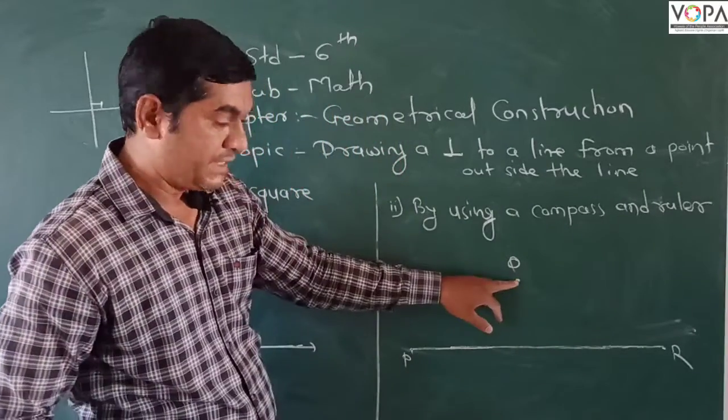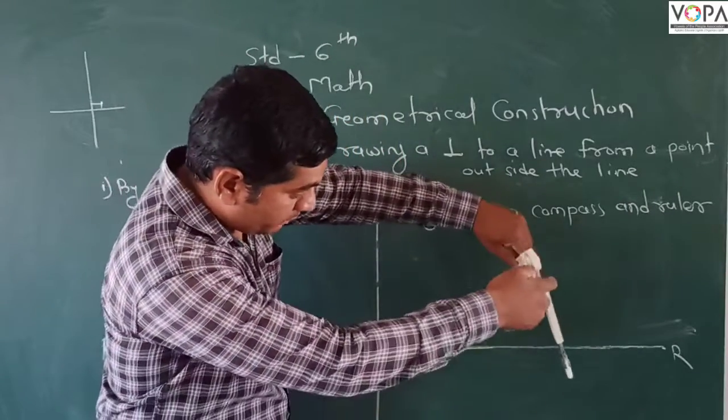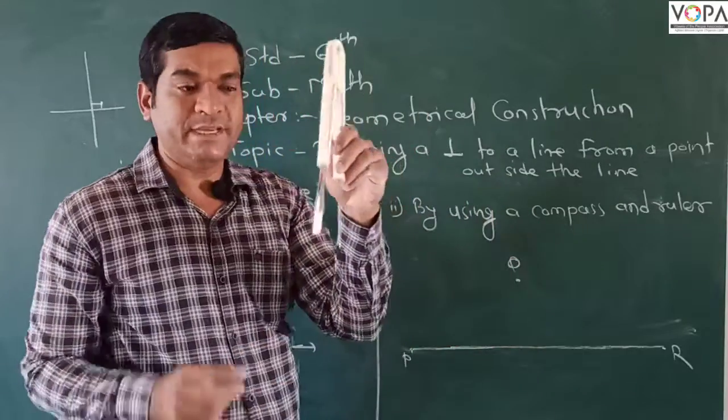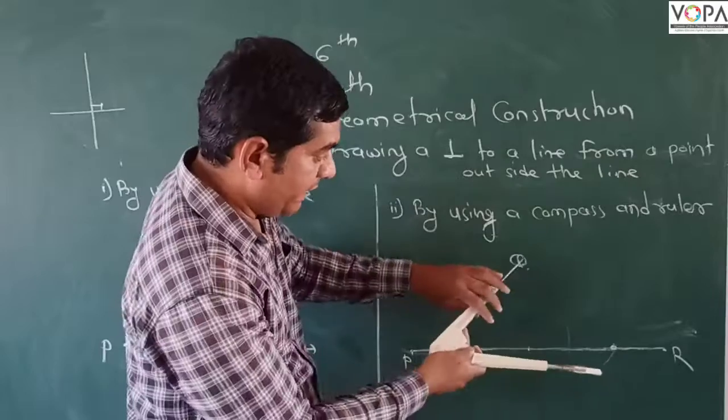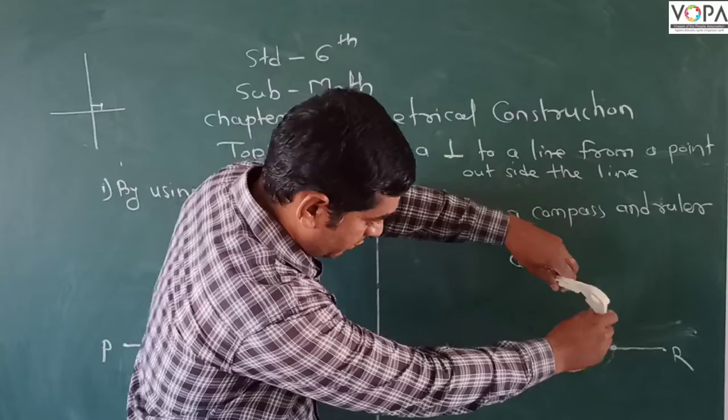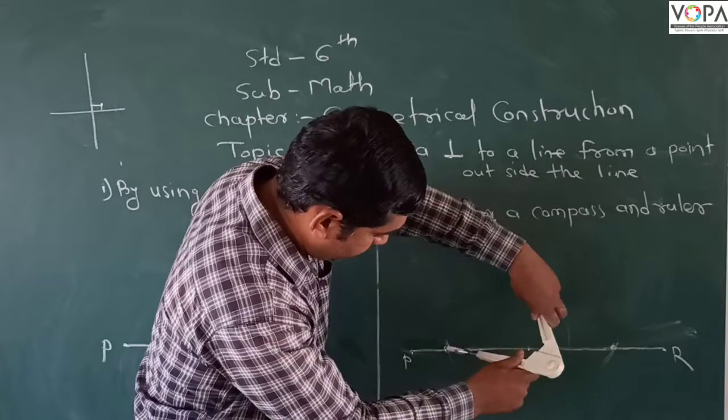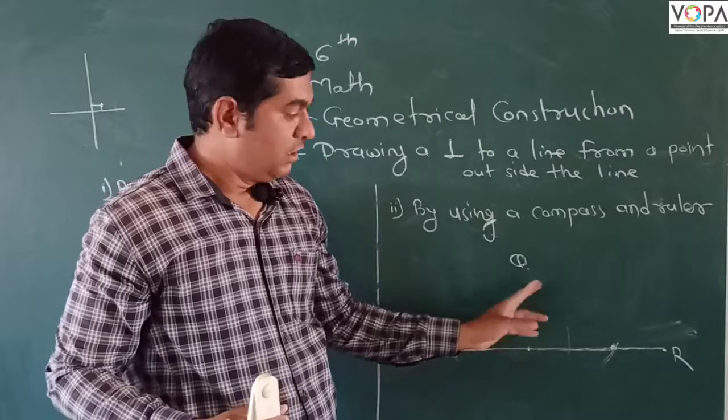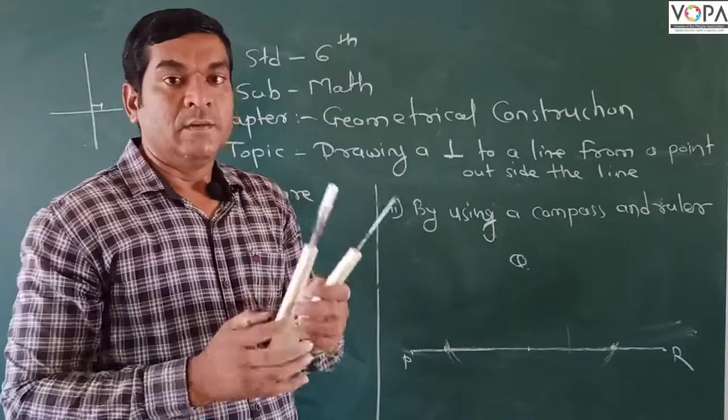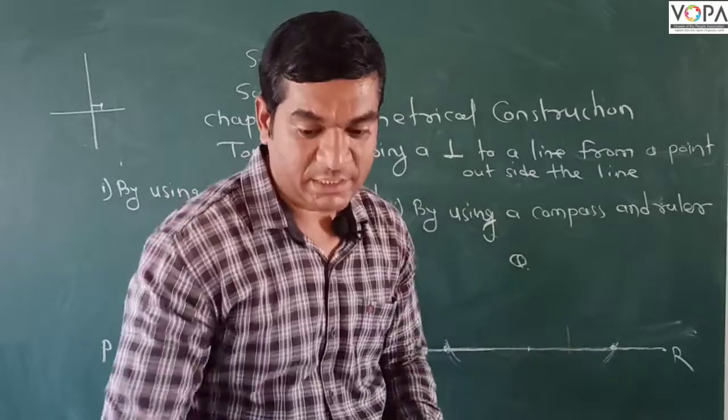From point Q, see the point Q. From point Q, take some measurement and make an arc like this one. This will be one arc and this will be another arc. From these two arcs, we're getting a first and second point.